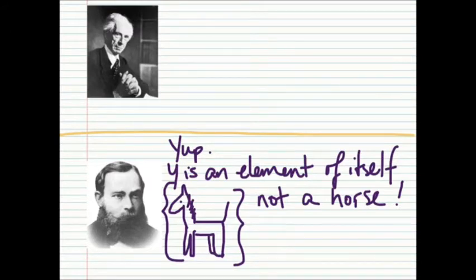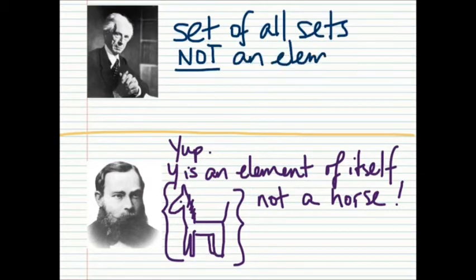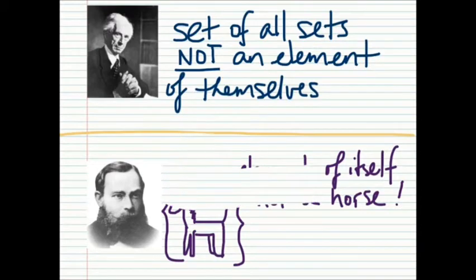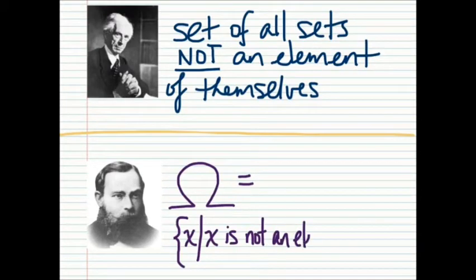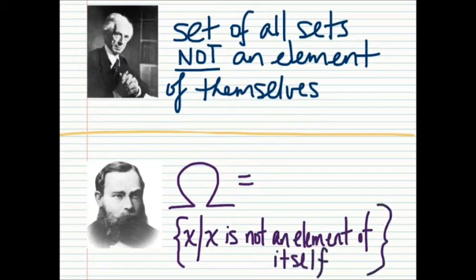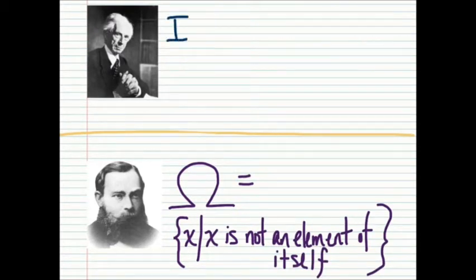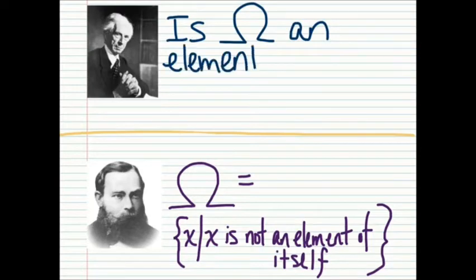Can I then form the set of all sets which are not elements of themselves? Okay. Let's define omega as the set of all sets which are not elements of itself. Then, is omega an element of itself?